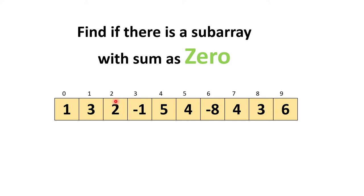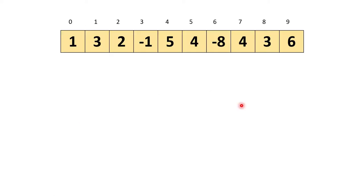Is there any subarray present which gives a summation result of 0? If you check from index 3 to 6 — elements -1, 5, 4, and -8 — adding them gives a sum of 0. So this array does contain a subarray where the sum is 0. Now, how do we solve this problem? The first approach we can take is a simple brute force approach — find each and every subarray and their sum.